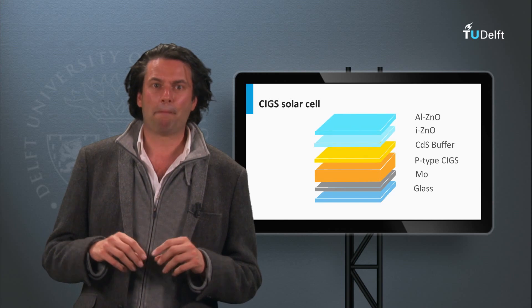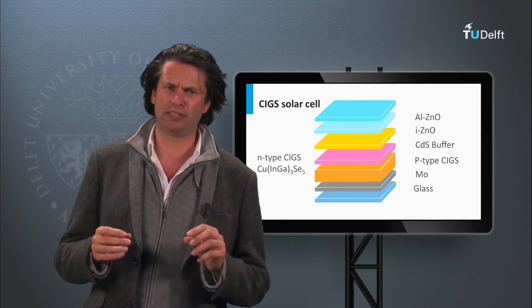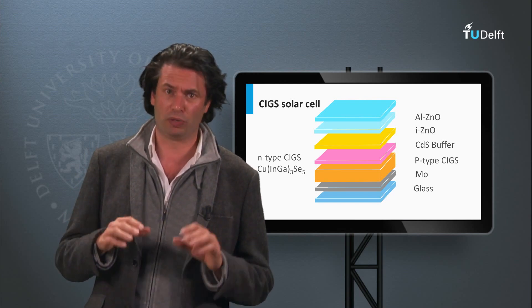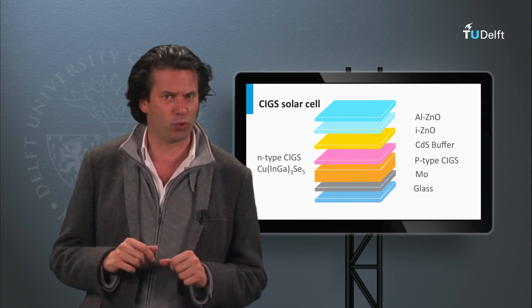This can be prevented by placing an n-type CIGS type of layer between the p-type CIGS and the cadmium sulfide interface, which screens the cadmium sulfide CIGS interface from the holes.